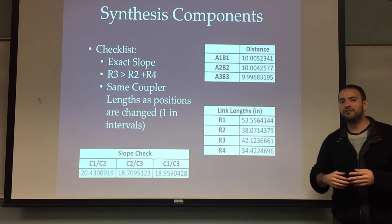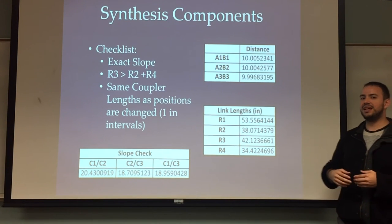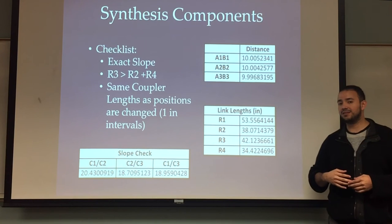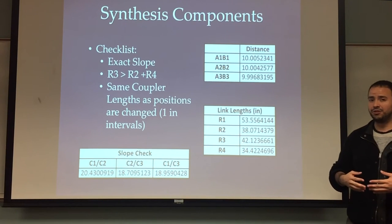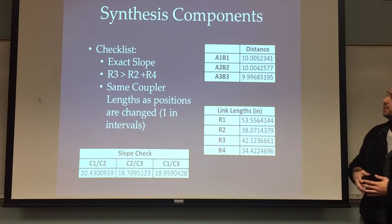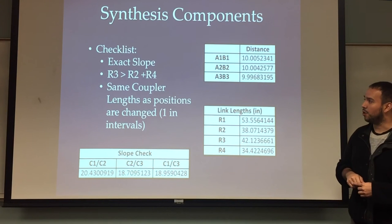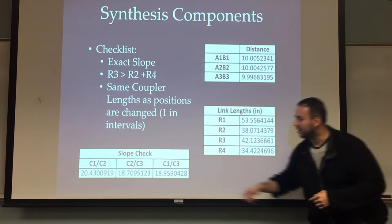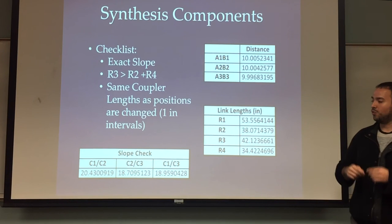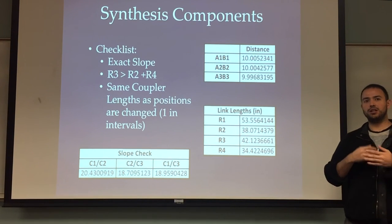So these are a few components that we came up with during the synthesis that are key to making this synthesis successful and making it complete. So the checklist is we have to have an exact slope. So on this slope check down here, you can see that the slope between these actual points and the slider are very close together.